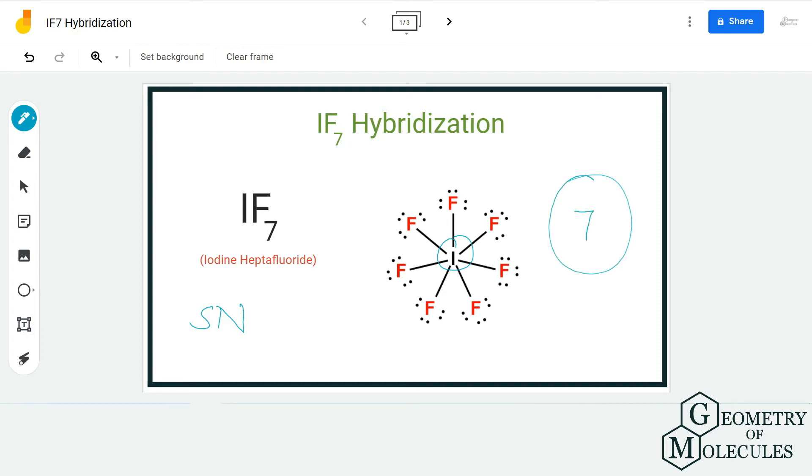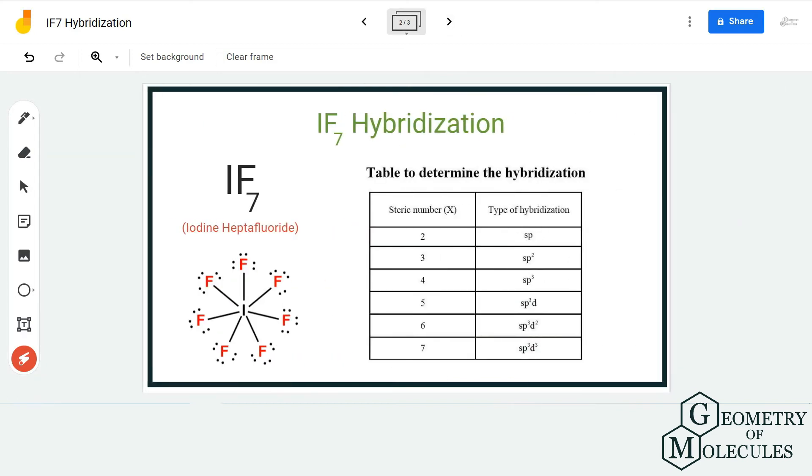As a result, we have seven bonding pairs of electrons on the central atom. Using this, we find out the steric number of the given molecule. Here, IF7 has seven bonding pairs of electrons, which means the steric number is seven for IF7.